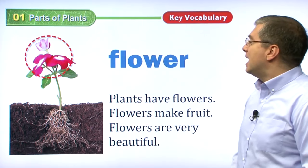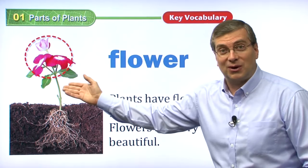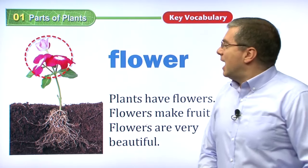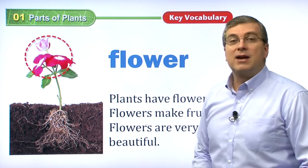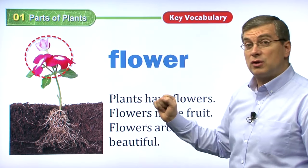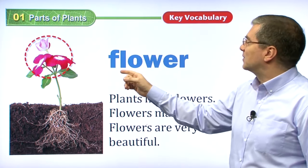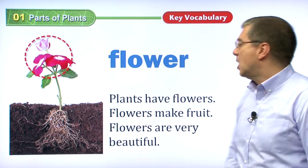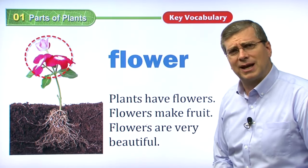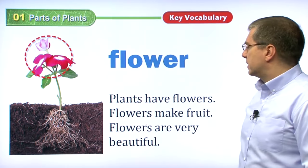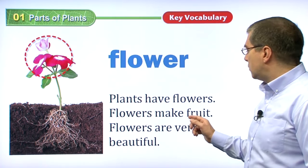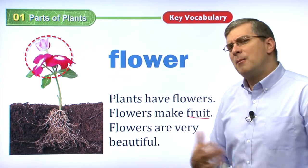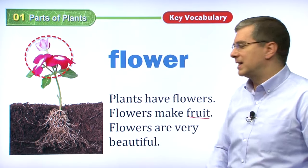Some plants are very beautiful, aren't they? In the springtime you can see many different colors, and these colors are made by flowers. Many plants and trees — trees are plants, of course — have flowers, and the flowers can be many different colors. What do flowers do for the plant? Flowers make fruit. That's what they do for us because we eat the fruit. But what does the fruit do for the plant? We'll find out soon.